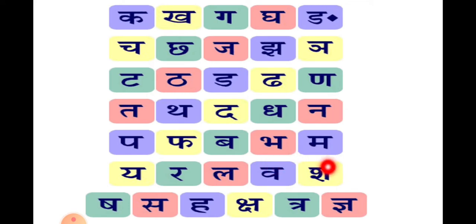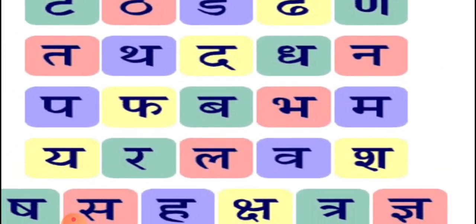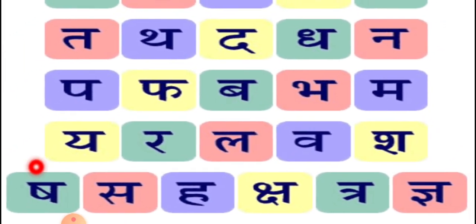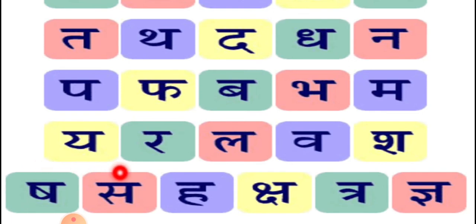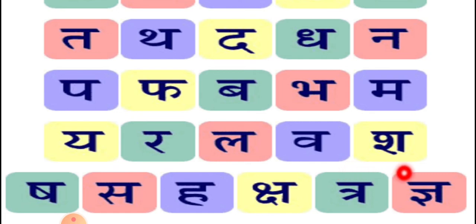Next वर्ग — शवर्ग। श से शलगम। ष से शंख। स से संत्रा। ह से हल। क्ष से क्षत्रिय। त्र से त्रिशूल। ज्ञ से ज्ञानी।